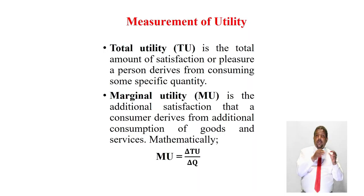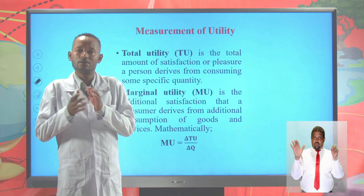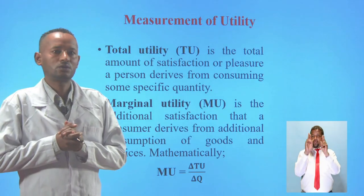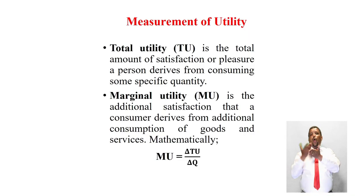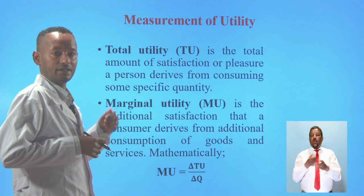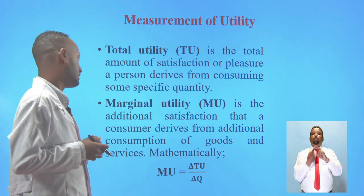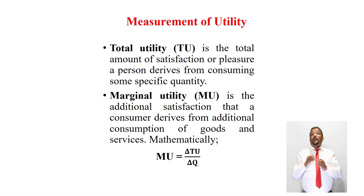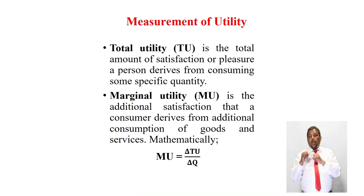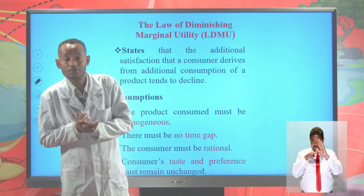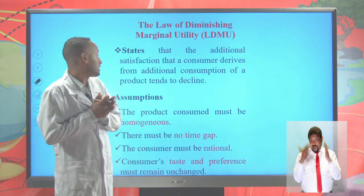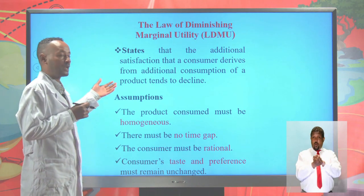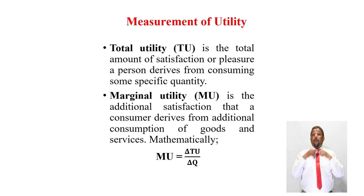Now let's look at the measurement of utility. We are going to see total utility and marginal utility. Total utility is the total satisfaction a consumer gets from some specific quantity of a commodity. Marginal utility is the additional satisfaction a consumer derives from an additional unit of a commodity. Mathematically, the marginal utility is the change in total utility divided by the change in unit consumption. The law of diminishing marginal utility states that the additional satisfaction a consumer derives from additional consumption tends to decline — the marginal utility of a commodity will always decline.